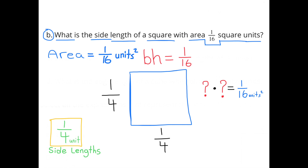B: What is the side length of a square with an area of 1/16 square units? The base and height when multiplied would have to equal 1/16 square units. So what number times itself equals 1/16? How about 1/4? 1/4 times 1/4 equals 1/16. So the side lengths would be 1/4 unit.